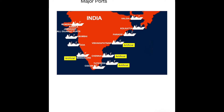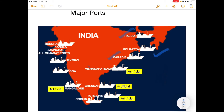Major ports of India: Kolkata is on the east coast, located on the bank of the Hooghli river. Haldia is also in West Bengal on the Hooghli river. Paradeep is in Odisha and handles iron ore and coal. Vishakhapatnam in Andhra Pradesh is the deepest landlocked port of India. Chennai in Tamil Nadu is the largest and oldest artificial harbour on the east coast.